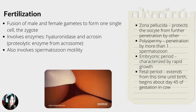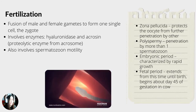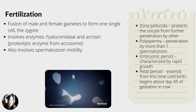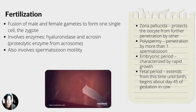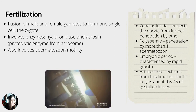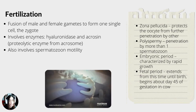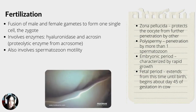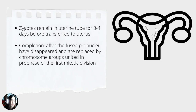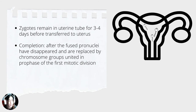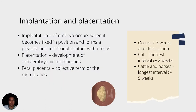Fertilization is the fusion of male and female gametes to form one single cell — the zygote. It involves the enzyme hyaluronidase and acrosin, a proteolytic enzyme from the acrosome, and also involves spermatozoa motility. Zygotes remain in the uterine tube for 3 to 4 days before being transferred to the uterus. The completion occurs after the fused pronuclei have disappeared and are replaced by the chromosome group united in prophase for the first mitotic division. Implantation and placentation occurs 2 to 5 weeks after fertilization. Cattle and horses have the longest interval at 5 weeks.